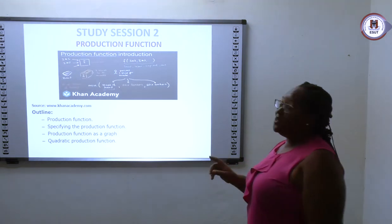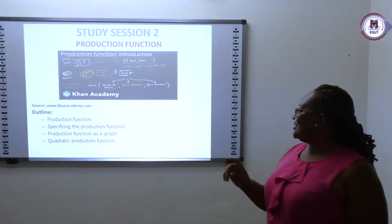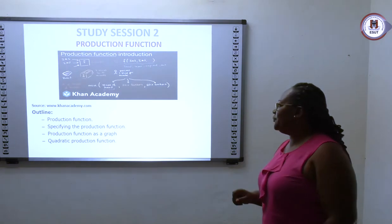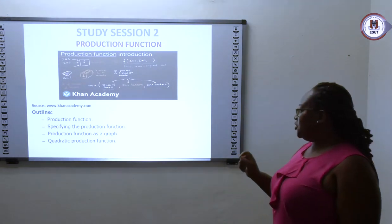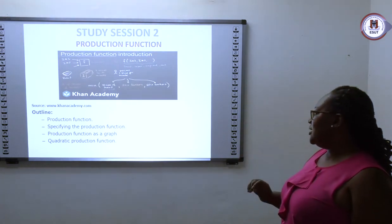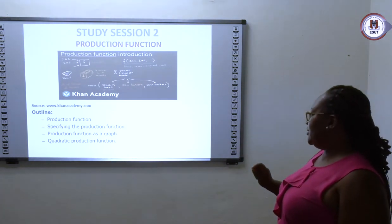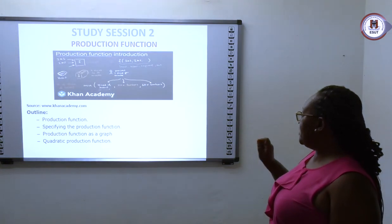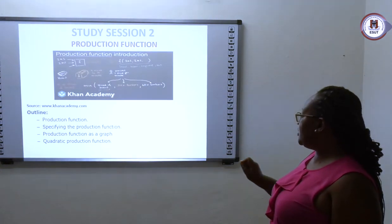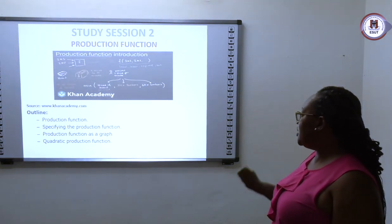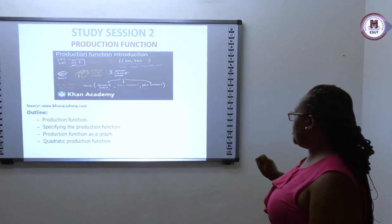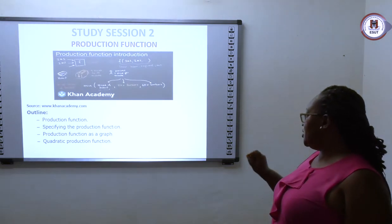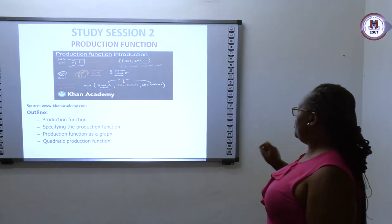In this second section, we are looking at the production function. The outline of this particular section covers: the production function itself, specifying the production function, the production function as a graph, and the quadratic production function.